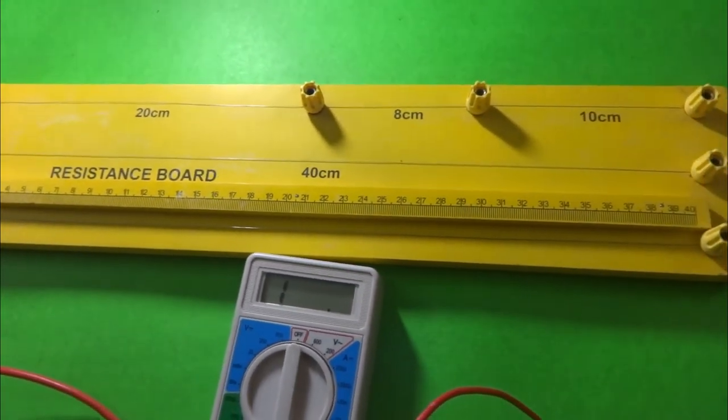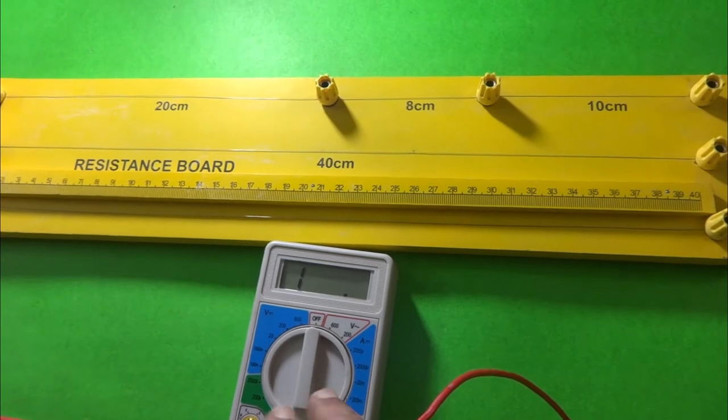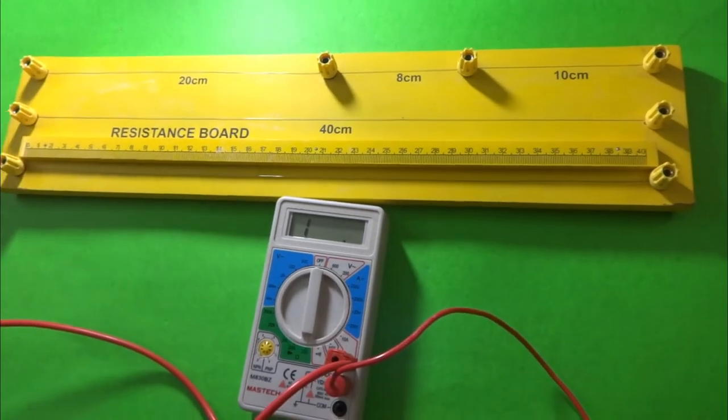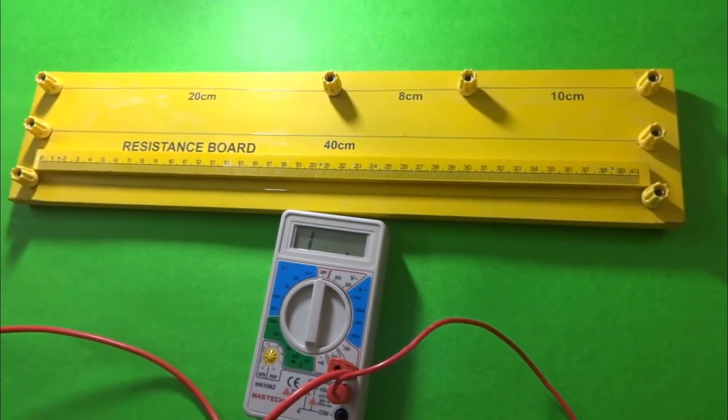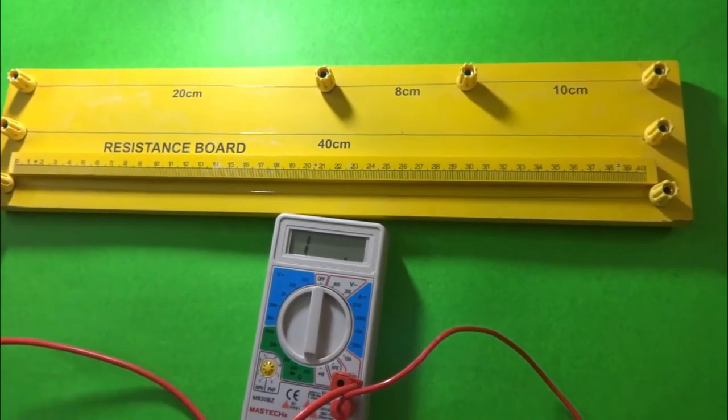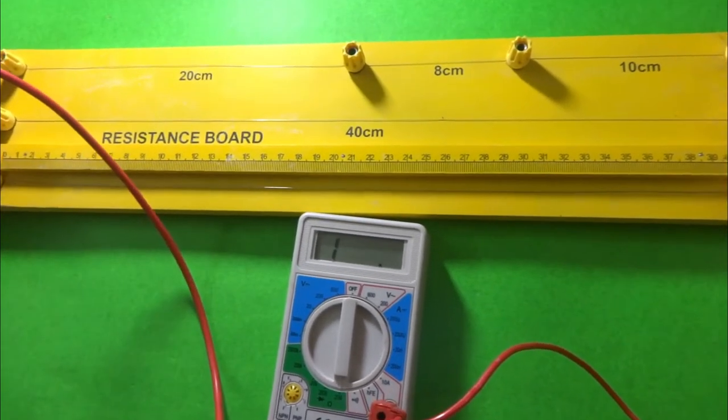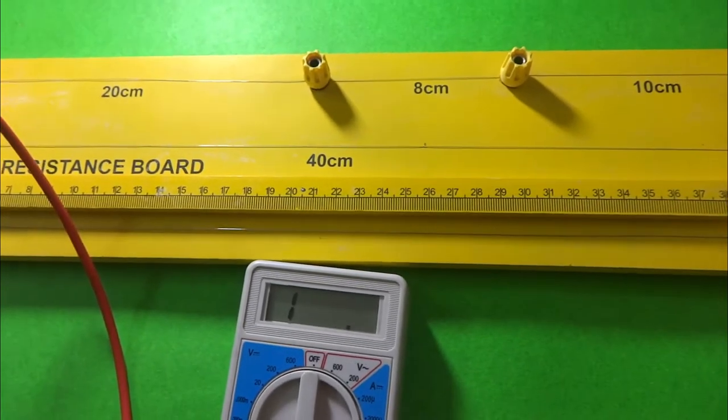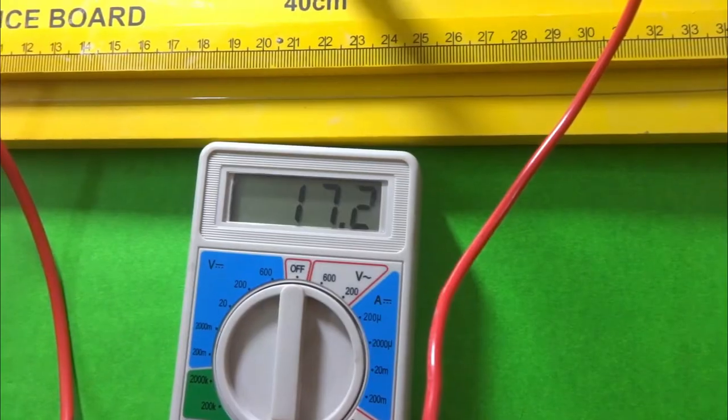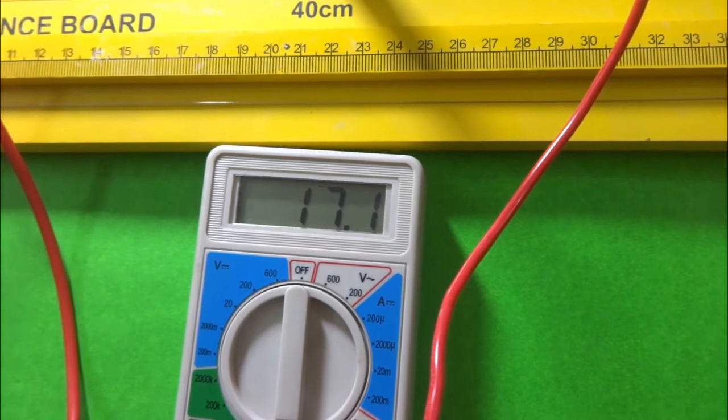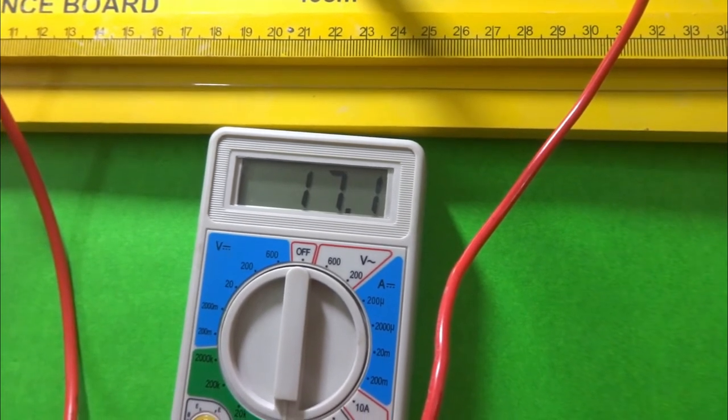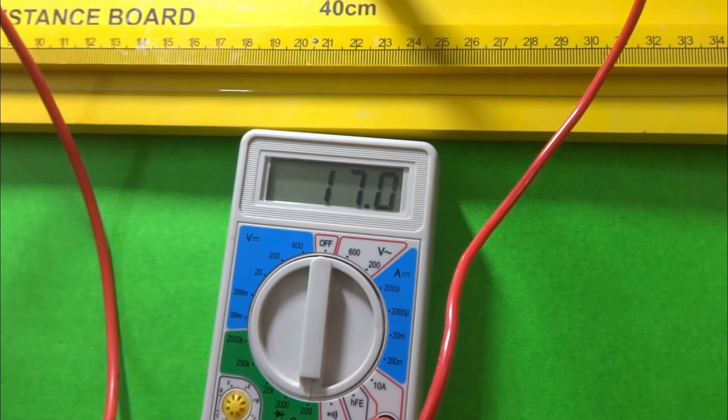This is the multimeter through which you can directly measure the resistance of any conductor between any two points. Let me connect. For the first wire, remember that it is a thin wire. And here you can observe the reading as 17.1.